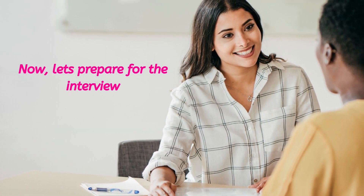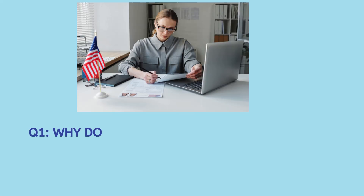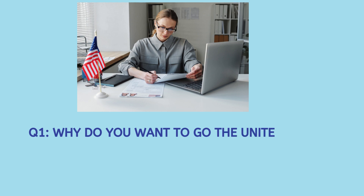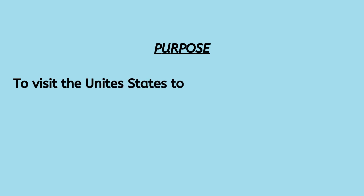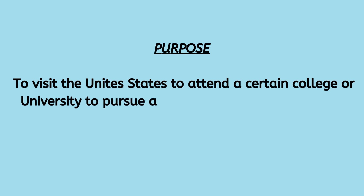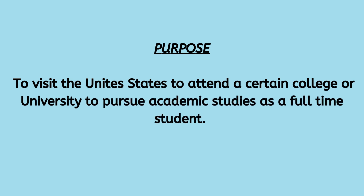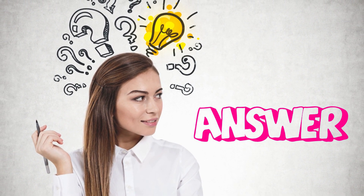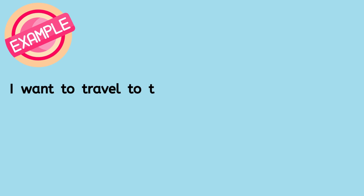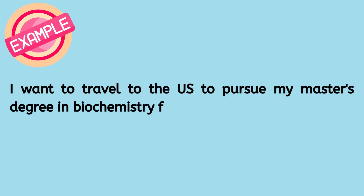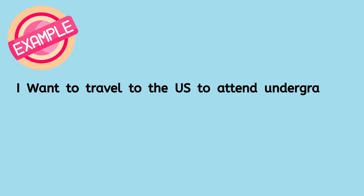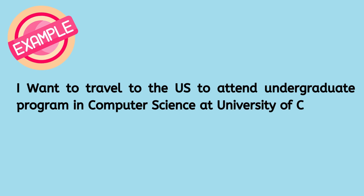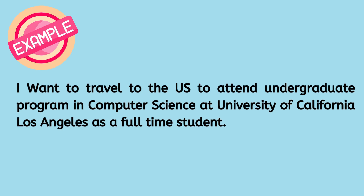Normally, the first question at any visa interview is related to the purpose of your visit: why do you want to visit the United States? For an F1 visa, there are two main keywords — academic studies and full-time student. Your purpose is to visit the United States to attend a certain college or university to pursue academic studies as a full-time student. For example, 'I want to travel to the United States to pursue my master's degree in biochemistry from Harvard University,' or 'I want to travel to the United States to attend an undergraduate program in computer science at University of California, Los Angeles as a full-time student.'